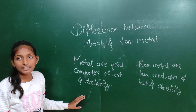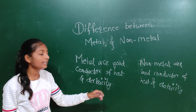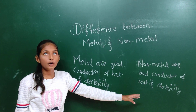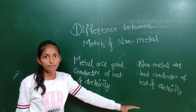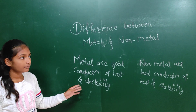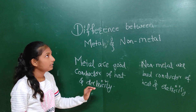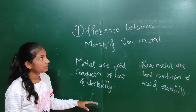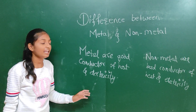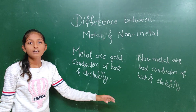Then metals have high boiling and melting points, and non-metals have low boiling point and low melting point. Then metals have ductility, meaning they can be drawn into thin wires, and non-metals are non-ductile.